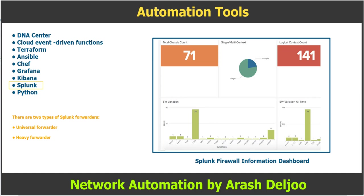Heavy forwarders perform parsing and send only indexed data to the indexer. They reduce transmitted data and decentralize the processing. However, this type of forwarder requires host machines to have processing capabilities.